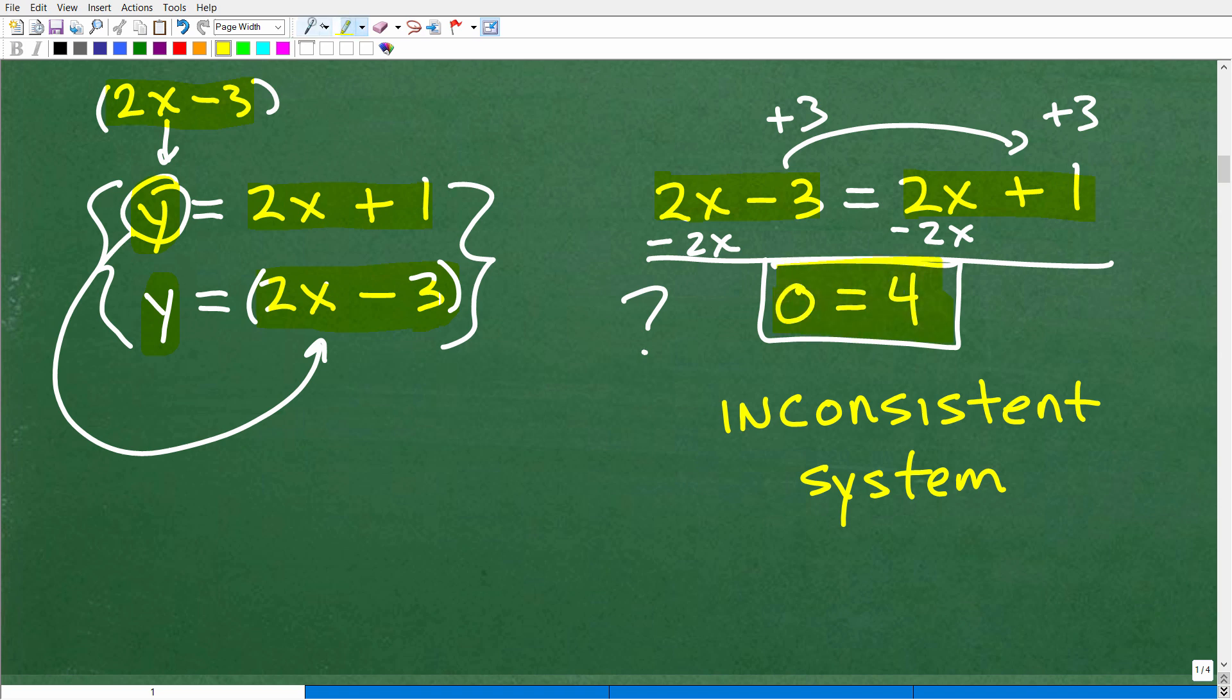So, 0 is equal to 4. Anytime you end up, when you're trying to do the substitution method or linear combination method, and you end up with a situation like 0 is equal to 4, 1 is equal to 7, where it's a false statement, especially if the variables go away, this right here is an equation with no solution. And you're going to end up with something funny like this.